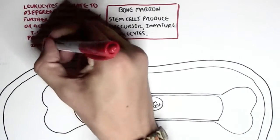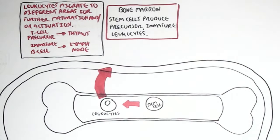Such as the T cell precursor will go to the thymus for maturation, the immature B cell will migrate to the lymph nodes to become activated later on.